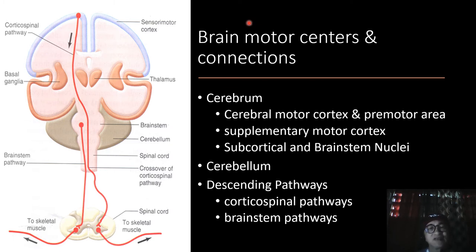Descending pathways include the corticospinal pathways and brainstem pathways. The corticospinal pathways control voluntary movements of the muscles of the head, neck, and distal extremities. The corticospinal pathway mediates muscle control for fine, isolated movements, while the brainstem pathway mediates coordination of large muscle groups of the trunk and base of limbs for maintaining and executing upright posture, walking, as well as head and body orientation.